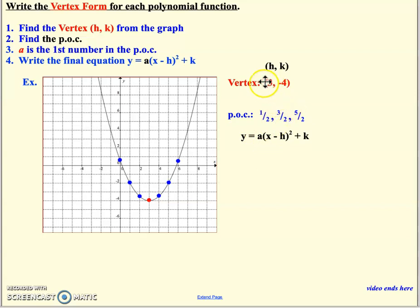And once I have the h and the k, and I have the first number in my pattern of change, which is a, I'm good to go. Drop them in, and you are done. So I think this is probably even less work than writing an equation from factored form, or from having your zeros. And that is it. So again, kept that second video really short. That's all your notes for 5.1.